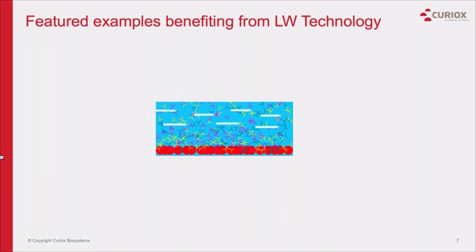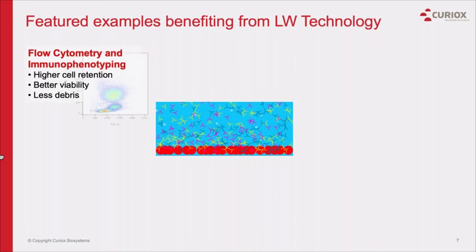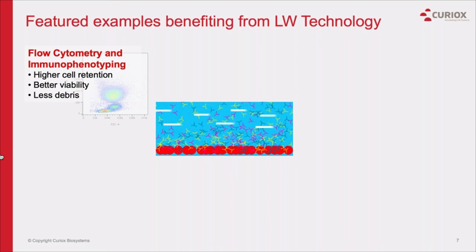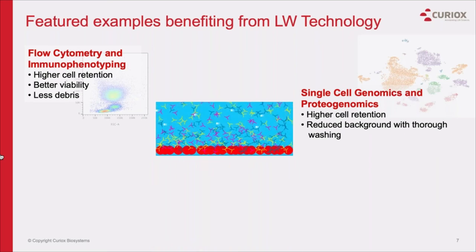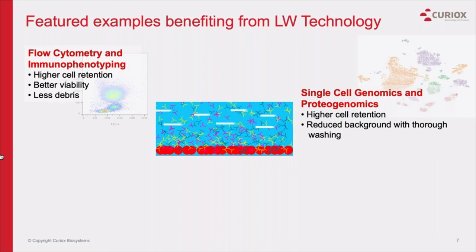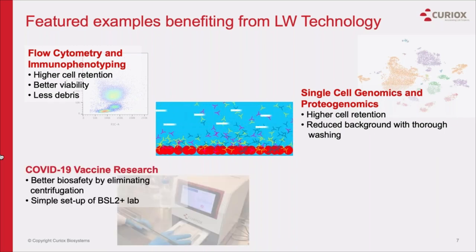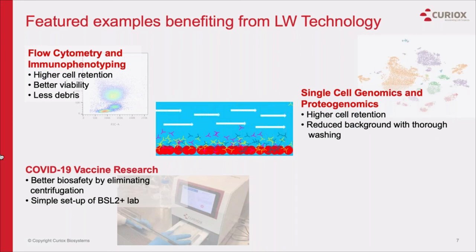Our users have reported multiple benefits of adopting laminar wash and eliminating centrifugation from their workflow. In flow cytometry assays, the high cell retention allowed users to evaluate markers and functional responses of rare cell populations. The increase in viability and removal of debris improved resolution, particularly in primary tissue preparations. In single-cell genomics and proteogenomics studies, greater cell retention gave confidence in reflecting native tissue composition, while reducing nonspecific background from sticky nucleotide-based reagents. We will be sharing more exciting data from single-cell proteogenomic users in the near future.